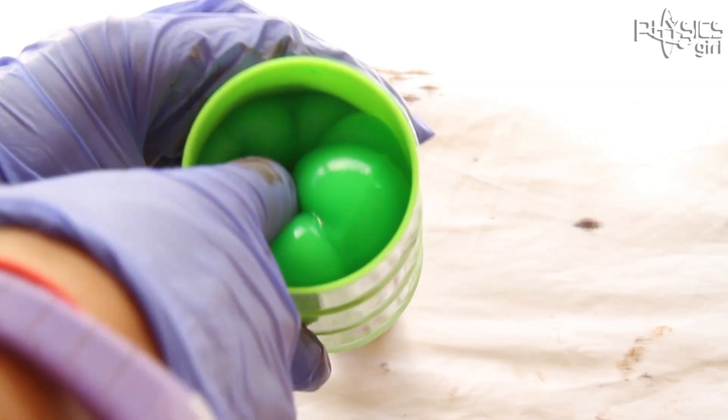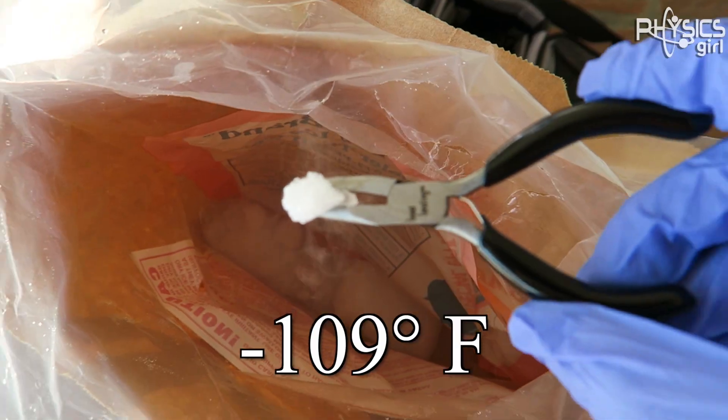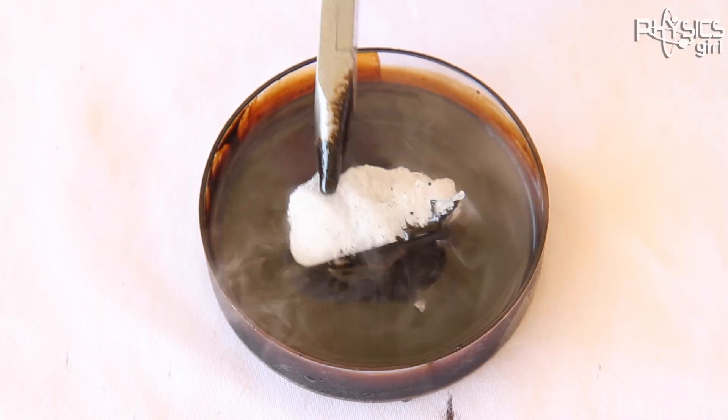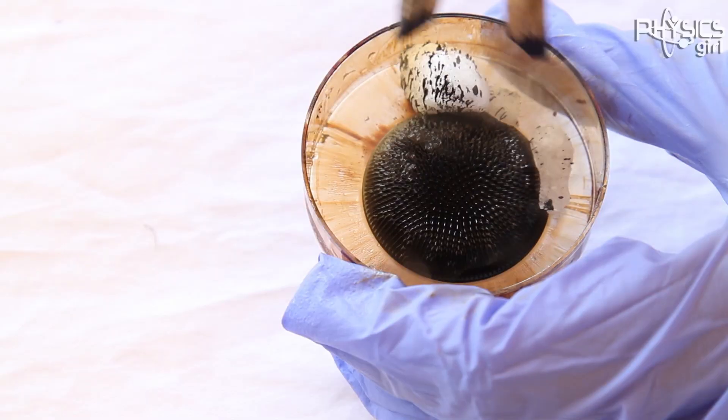I tried slime - meh - and dry ice, which is cooled down to negative 109 degrees Fahrenheit. The only notable behavior with this combination was that the dry ice, which repelled the ferrofluid and typically slid down the ferrofluid mound like a ball rolling down a hill...